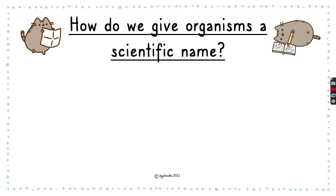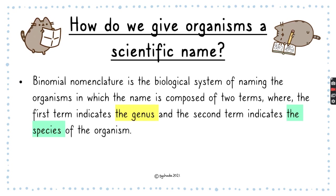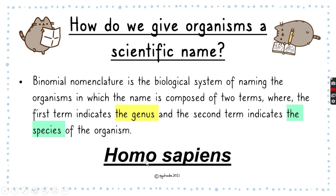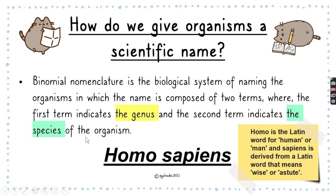Binomial nomenclature is the biological system of naming organisms in which the name is composed of two terms — the first term indicates the genus and the second term indicates the species. For example, Homo sapiens: the genus is Homo and the species is sapiens. Homo is a Latin word for human or man, and sapiens is derived from a Latin word meaning wise or astute.